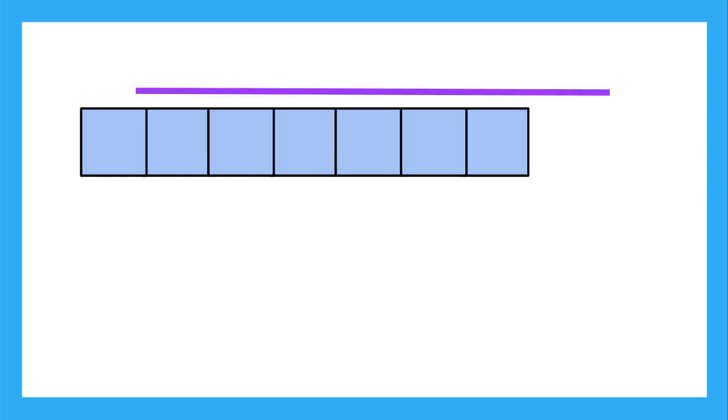Now what if I asked you to find how many boxes long this line was, but the boxes were set up like this? Well, you can't just count the boxes. Since the end of the boxes aren't lined up with the end of the line, you have some of the line that isn't being measured, and some extra box that is being counted.